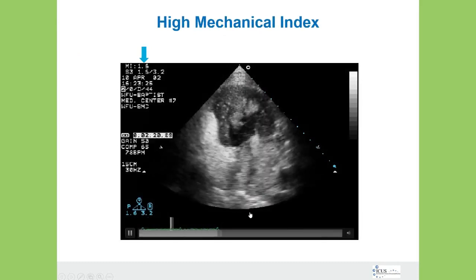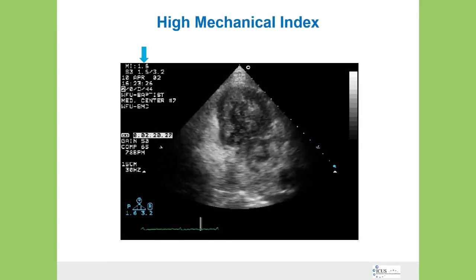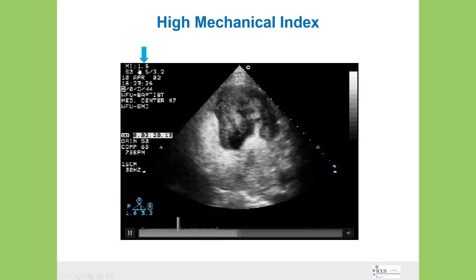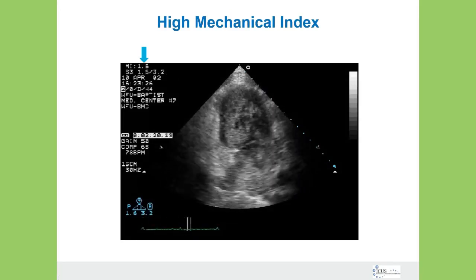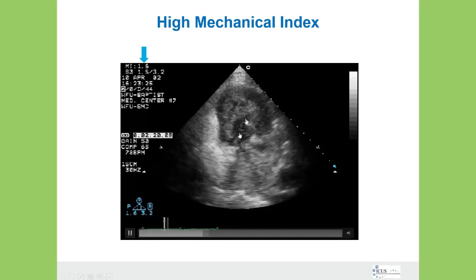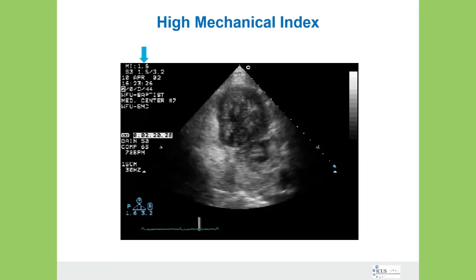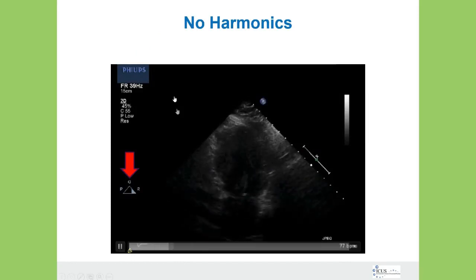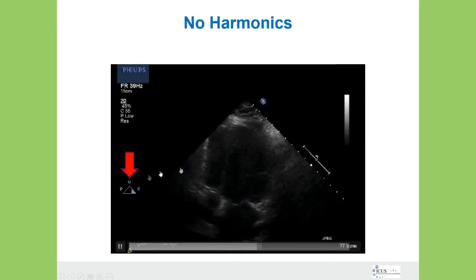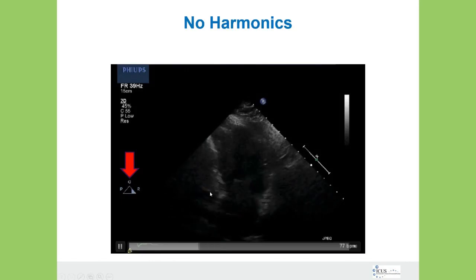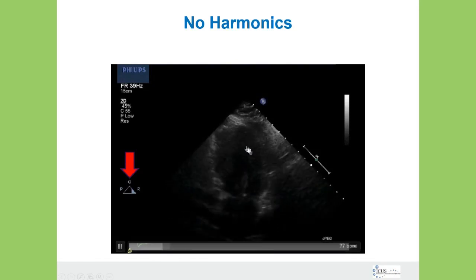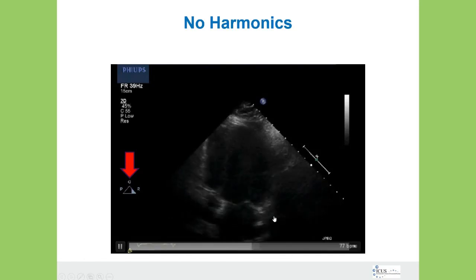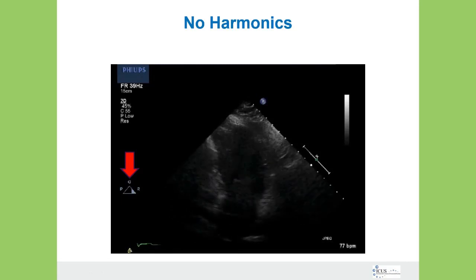Here's a patient we did many years ago where the sonographer did not go into the contrast preset. Looking up top, the mechanical index is 1.6 — that's what we usually use for unenhanced imaging. I can tell right away they weren't using the contrast preset. You can see there's not good filling of the left ventricle due to bubble destruction from the high mechanical index. In another example, there's very little contrast in the left ventricle and they're not using harmonics, which greatly helps visualization of contrast. This is kind of what we saw back in the Albunex days without second harmonics.